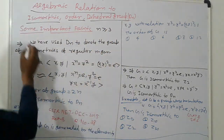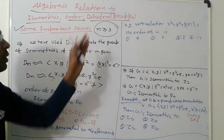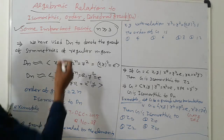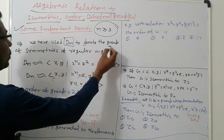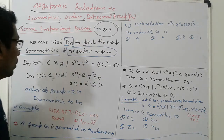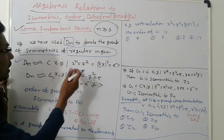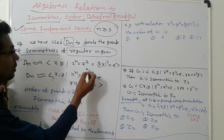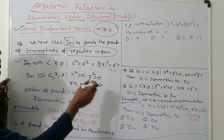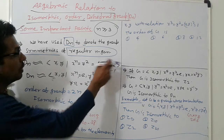Some important points: when n is greater than or equal to 3, we use Dn here. Dn means dihedral group — it denotes the group of symmetries of a regular n-gon. So Dn is represented by the dihedral group in the format: Dn = ⟨x, y | x^n = y^2 = (xy)^2 = e⟩.